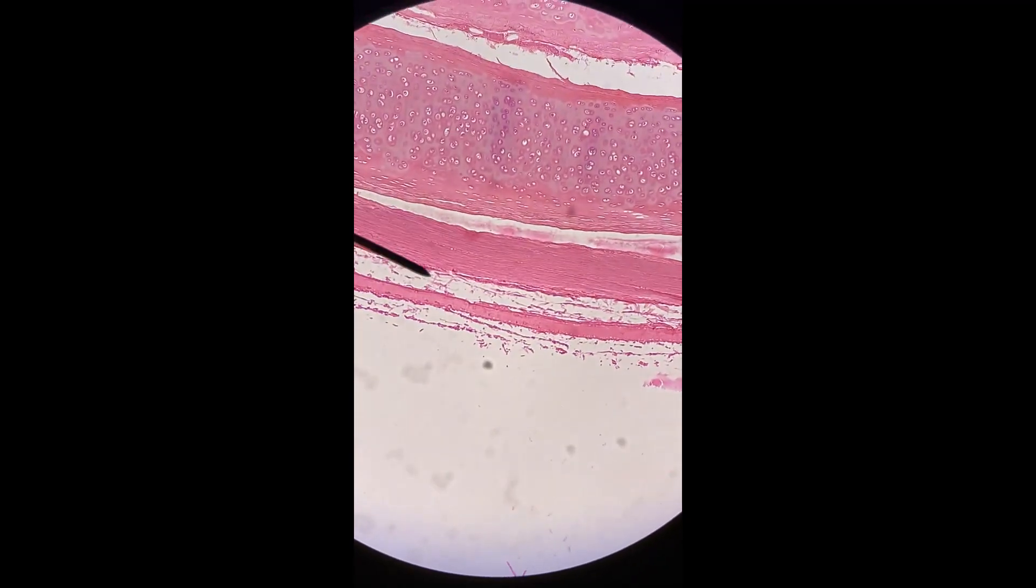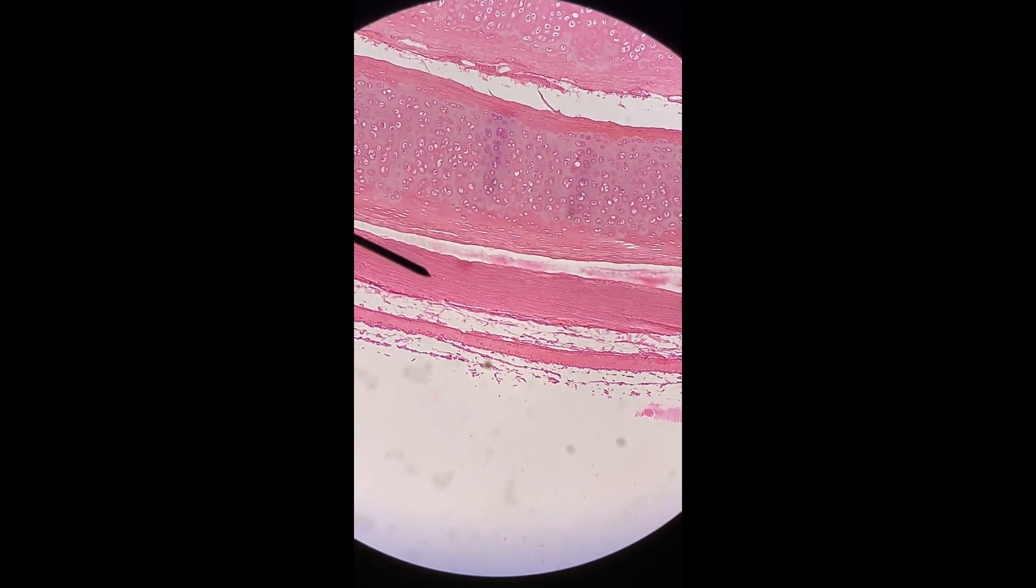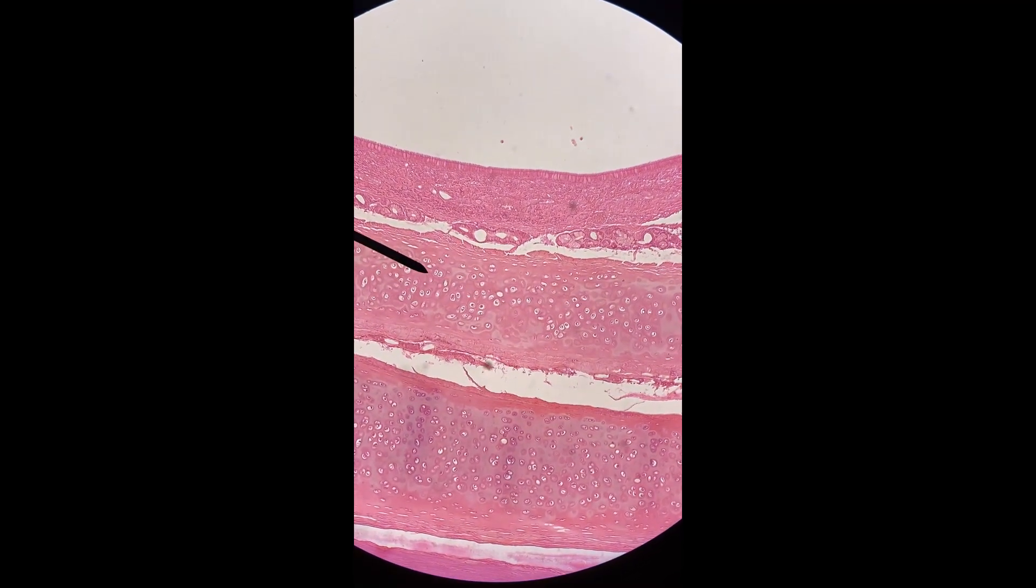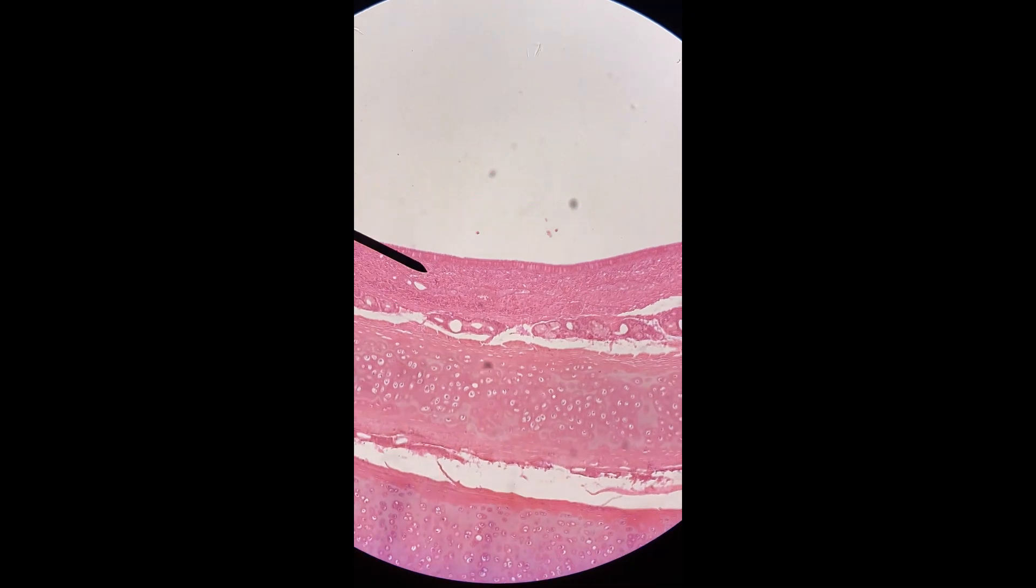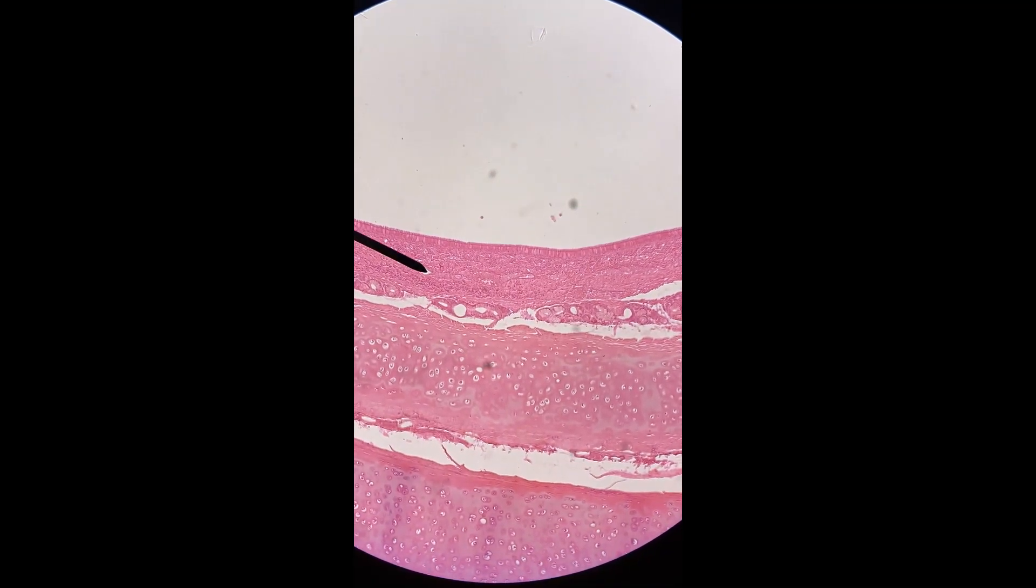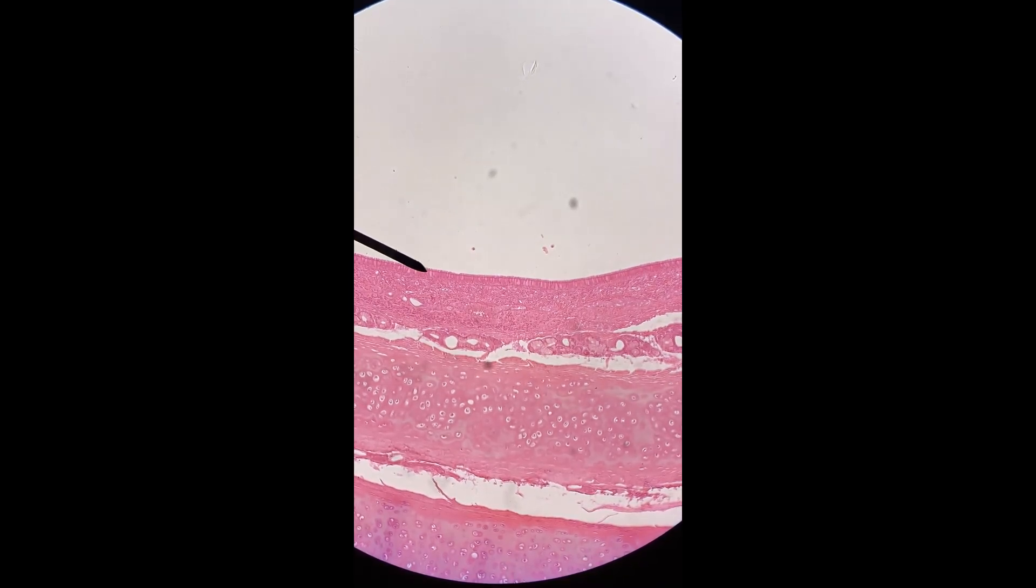Down this way, where the pointer is, this is smooth muscle. Your trachea has smooth muscle, then hyaline cartilage layer rings as they go down the trachea, and then some areolar connective tissue right here. This layer is the pseudostratified ciliated columnar epithelial layer.